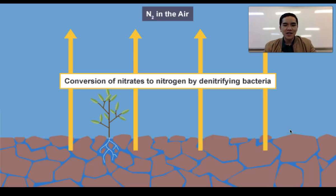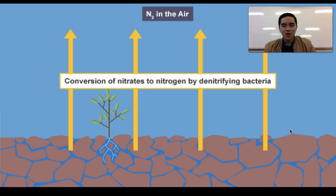As a final consideration, we also need to consider that there is a process to take these available nitrogen compounds and convert them back into atmospheric nitrogen. Denitrifying bacteria convert nitrates and ammonia and ammonium-based compounds back into nitrogen gas.